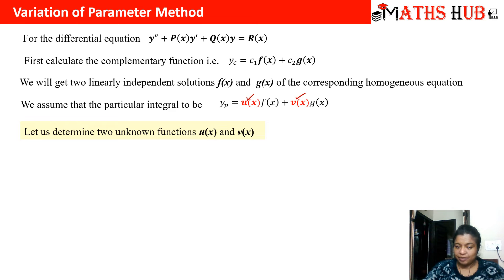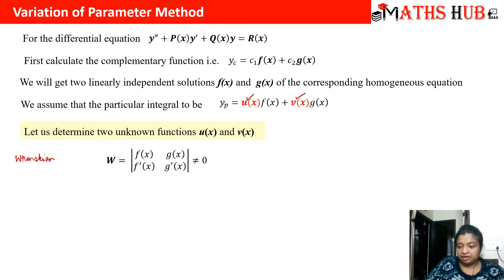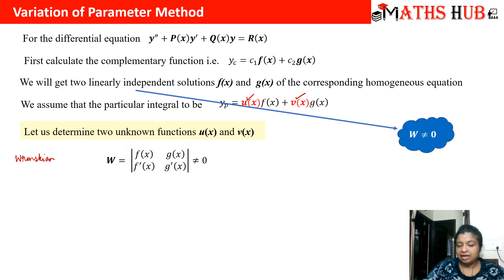We calculate u(x) and v(x) with the help of the Wronskian. The Wronskian is the determinant of the matrix where we keep f(x) and g(x) in the first row and their first derivatives in the second row. We take the determinant, and this determinant should not be equal to zero.